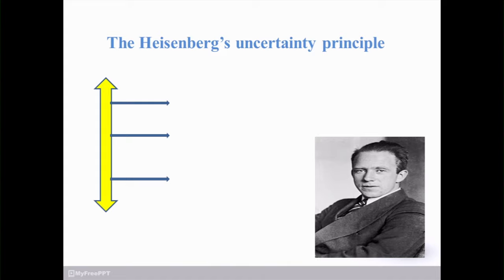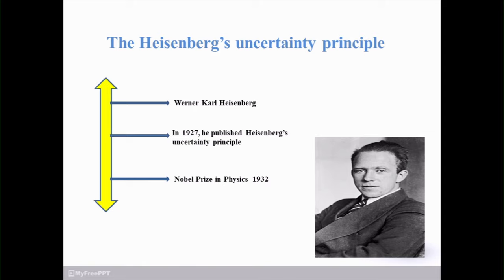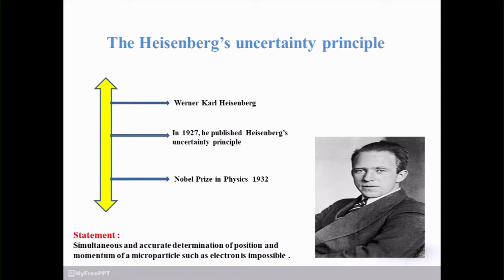Now, another scientist — Werner Heisenberg. In 1927, he published the Heisenberg Uncertainty Principle. In 1932, he got the Nobel Prize in Physics for this principle. At the extremely right-hand side, you can observe the photo of Werner Heisenberg. The statement is: simultaneous and accurate determination of the position and momentum of a microparticle such as an electron is impossible.